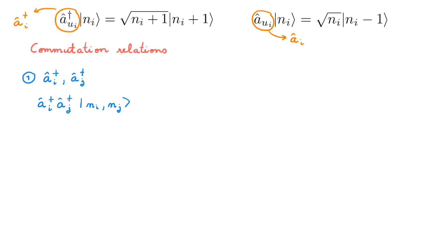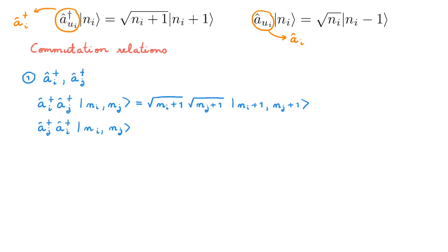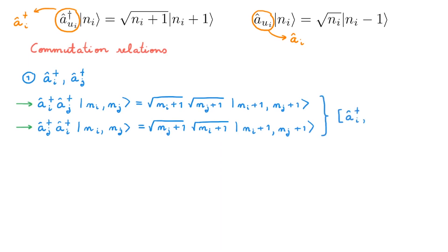Using the definition twice, we obtain two prefactors and then the state with two extra particles, one in each of the two single particle states. Next, let's calculate the same action with the order of creation operators exchanged. Calculating the difference of these two equations, we obtain that the commutator of aI-dagger and aJ-dagger vanishes. This holds even if i equals j, since in that case the creation operators commute trivially as they are the same operator.